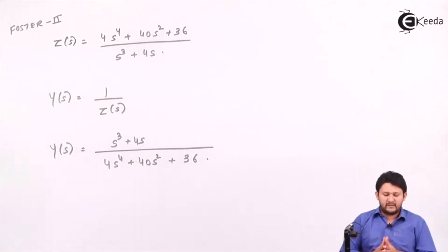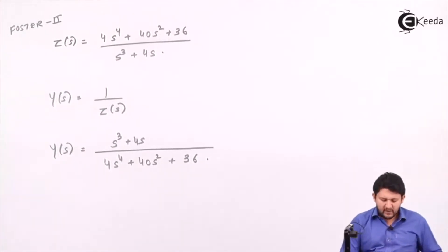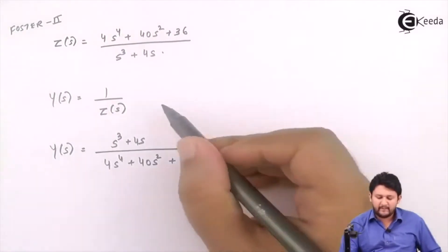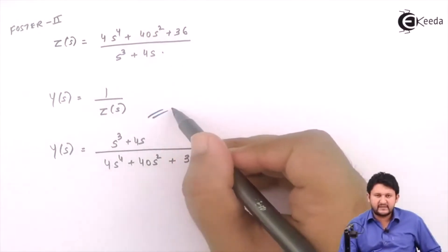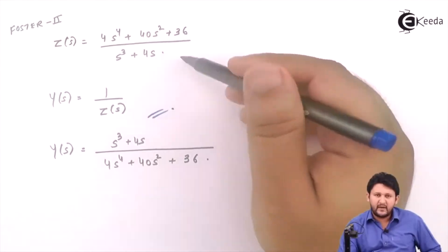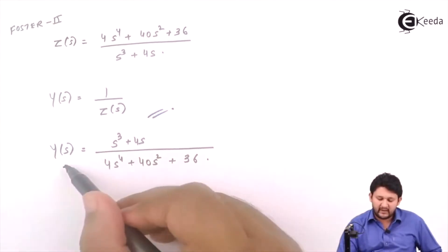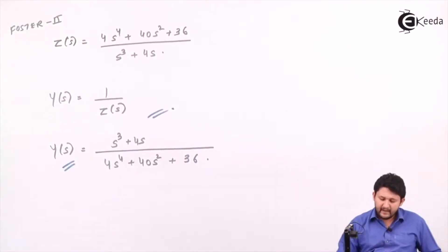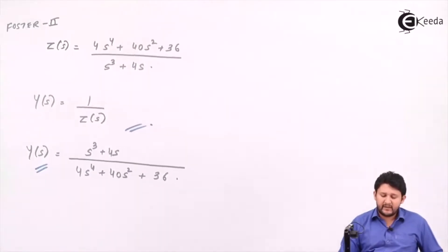Impedance and admittance have a relation of inverse, so Y(s) is given as 1 upon Z(s). That means Z(s) will be inverted to get the value for Y(s). After getting Y(s), again your basic step is that you need to apply partial differentiation.